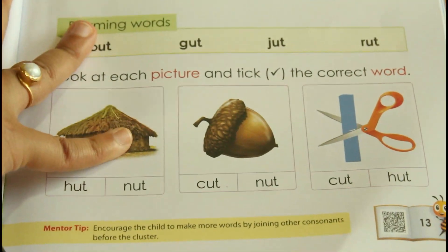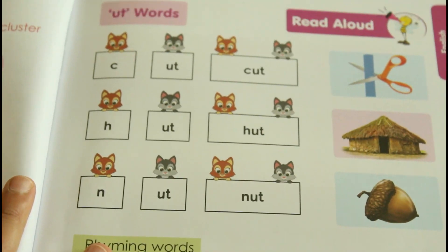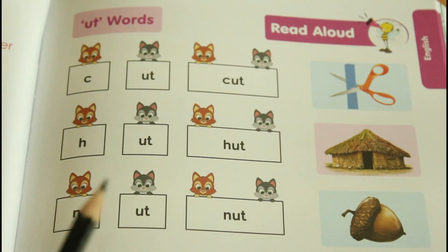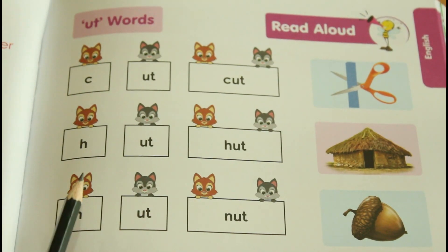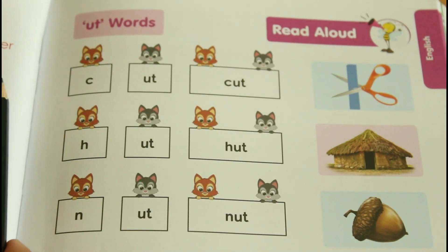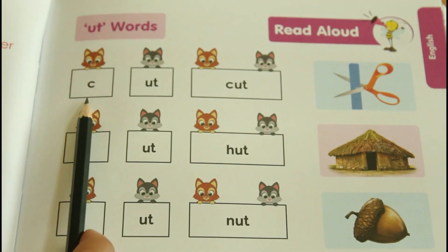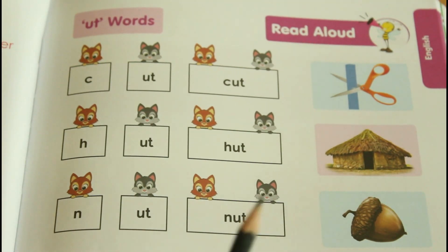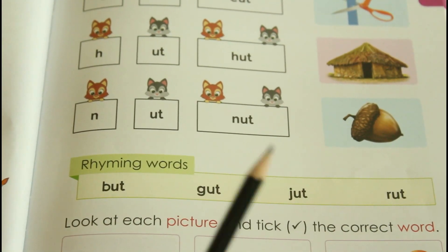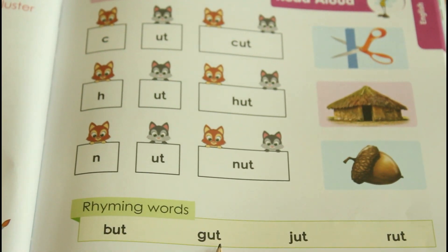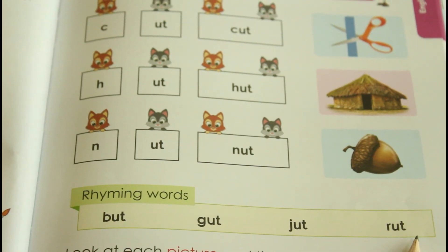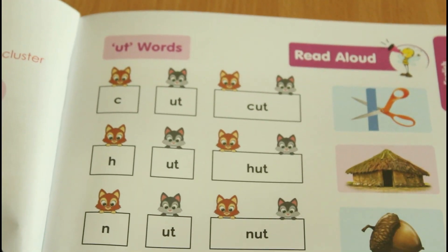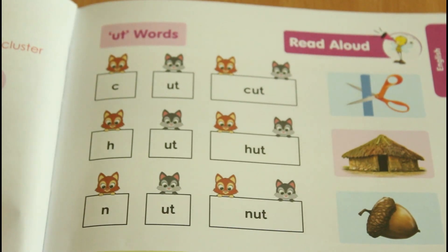Now let's move on to the last word family. Which word family is this, children? UT. Repeat after me: 'ut.' C-ut: cut. H-ut: hut. N-ut: nut. Very good! And the rhyming words: but, gut, jut, rut. These are the UT family words.